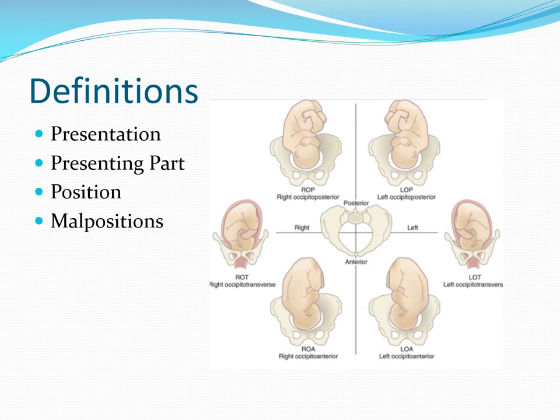Lie of a fetus means the relationship of the longitudinal axis of the uterine ovoid to the longitudinal axis of the fetus. The most common lie is the longitudinal lie, where the two axes are parallel. When it is perpendicular, it is called a transverse lie. If the two axes are oblique in relation, we call it an oblique lie. Longitudinal lie is the normal lie, whereas transverse and oblique lie are abnormal lies.